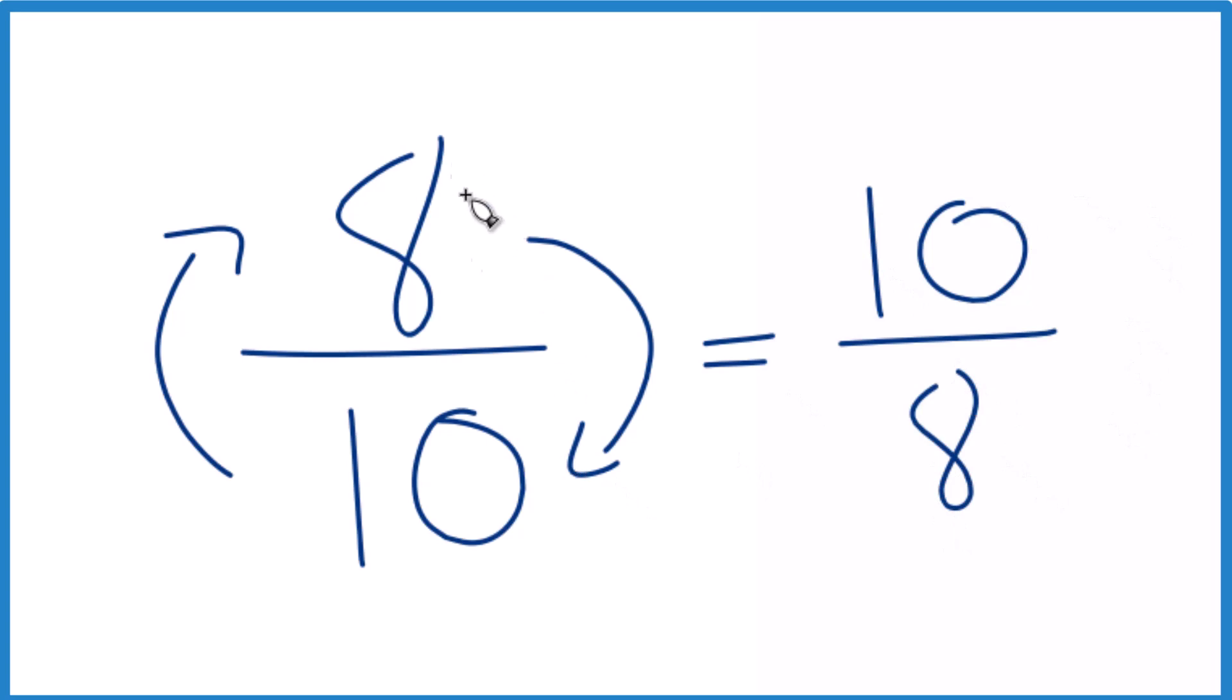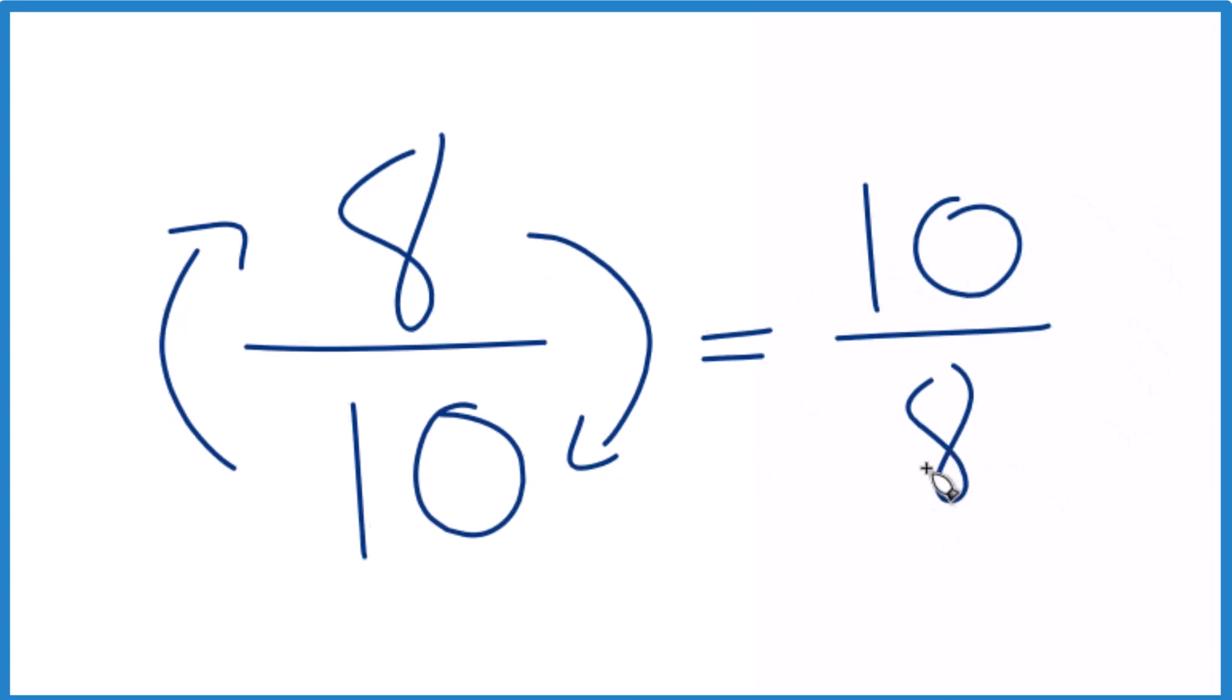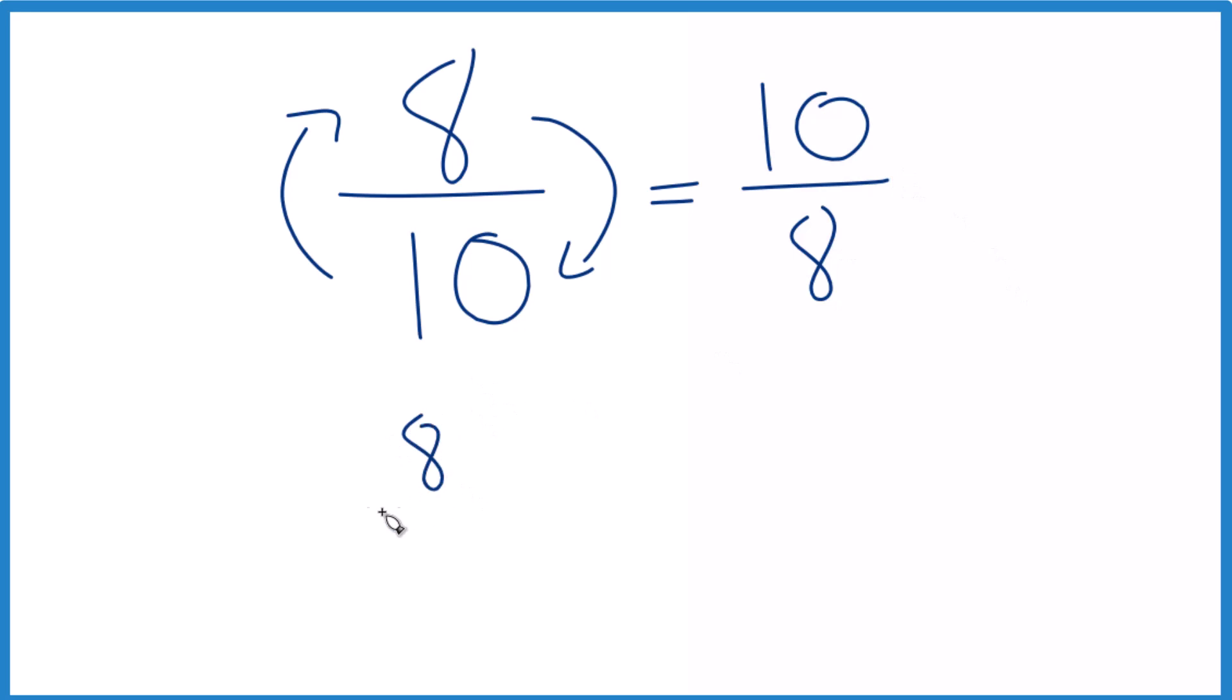So the reciprocal for 8 tenths, that's just 10 eighths. And we can check that. We could take 8 tenths, multiply it by its reciprocal, which is 10 eighths,